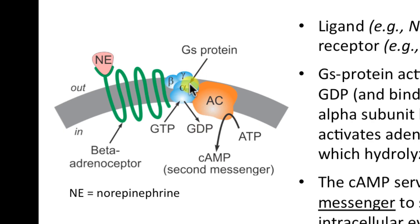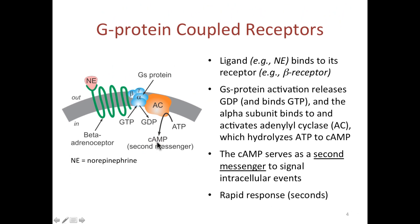This conformational change and dissociation leads to activation of the enzyme adenylate cyclase, which causes the conversion of ATP to cyclic AMP. Cyclic AMP is then a second messenger that elicits a number of other effects in the cell. In the case of the heart, this leads to an increase in the force of contraction. This G-S protein-coupled response is very rapid — it occurs in a matter of seconds.